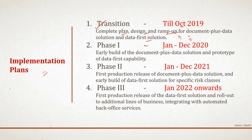Phase one runs from January to December 2020, focusing on early build of the document-plus-data solution and a prototype for data-first capabilities. Phase two runs from January to December 2021, covering the first production release of the document-plus-data solution and early build of the data-first solution for a specific class — Marine has already been selected. Phase three begins January 2022 onward, with the first production release of the data-first solution and rollout to additional lines of business, integrating with automated back-office operation services.